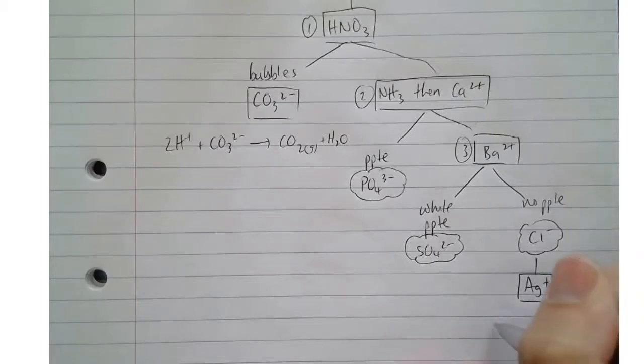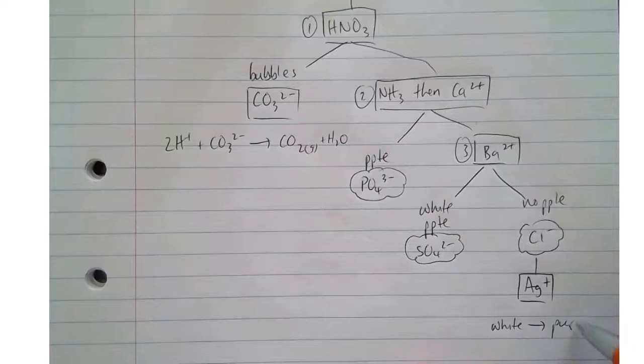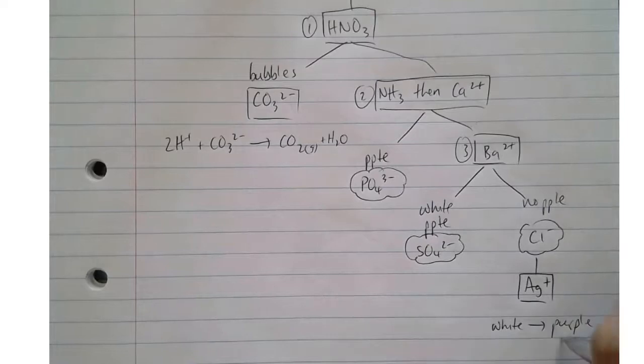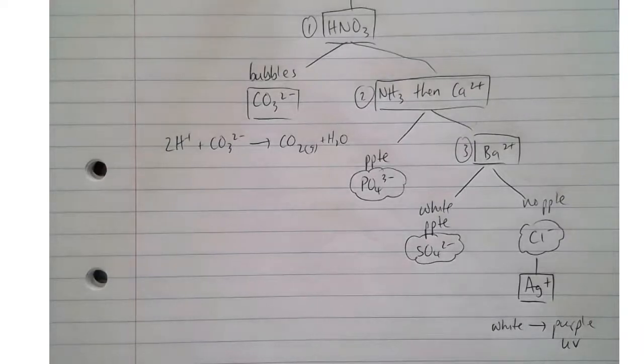Because what it'll do, it'll form a nice white precipitate that will change to a purplish colour, it will change colour in the presence of UV light. So what that does is that provides some confirmation for us that chloride is the ion that is present, aside from just narrowing it down from our set.